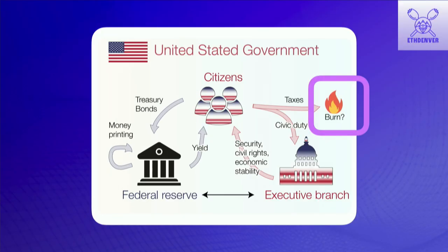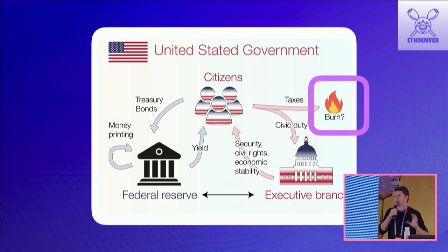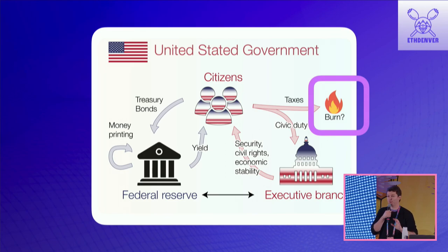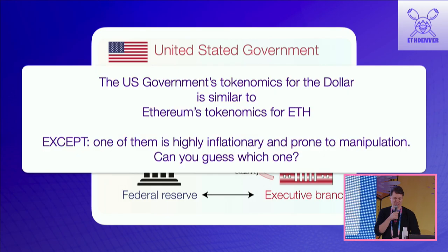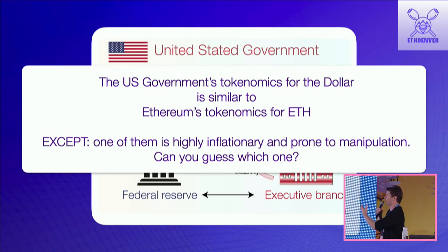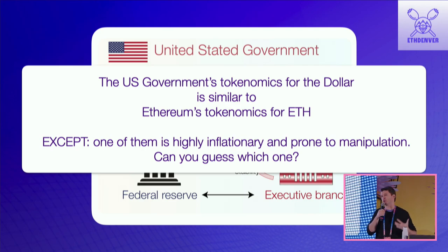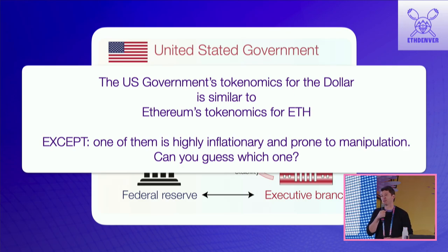If you make the switch that paying taxes burns your funds — a little bit like EIP-1559 — you get to a very interesting setup. If you look at this closely, you can actually get to a point where you can view the US government's tokenomics for the dollar, which is actually quite similar to the tokenomics for ETH and how Ethereum handles supply of the ETH token.